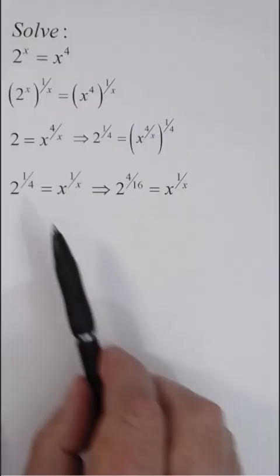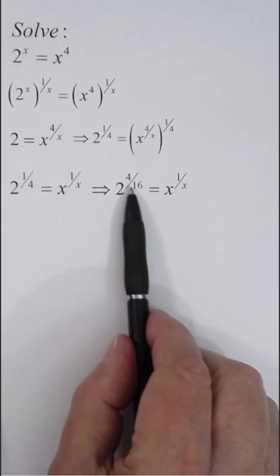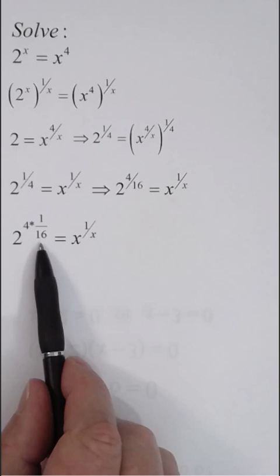1/4 is the same thing as 4 over 16. You will see later why I do that. And 4 over 16 is the same thing as 4 times 1 over 16.